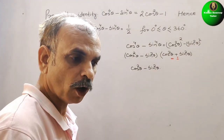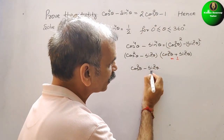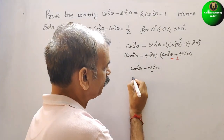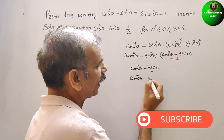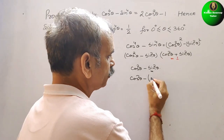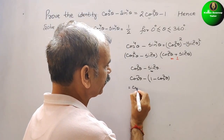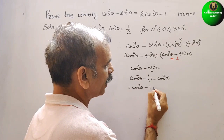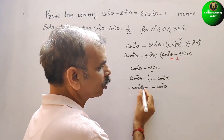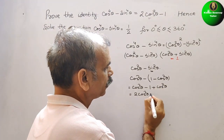Now if you see what we have to prove, they have given it in cos only. That means we have to convert sin into cos. So cos square theta minus sin square theta — sin square theta is 1 minus cos square theta. So it becomes cos square theta minus 1 plus cos square theta, which is equal to 2 cos square theta minus 1.